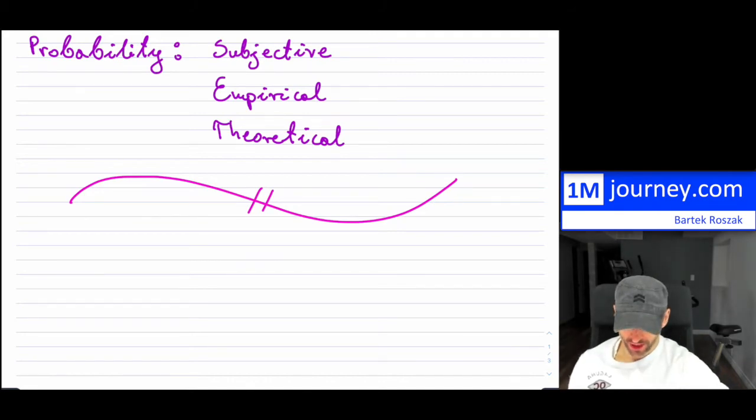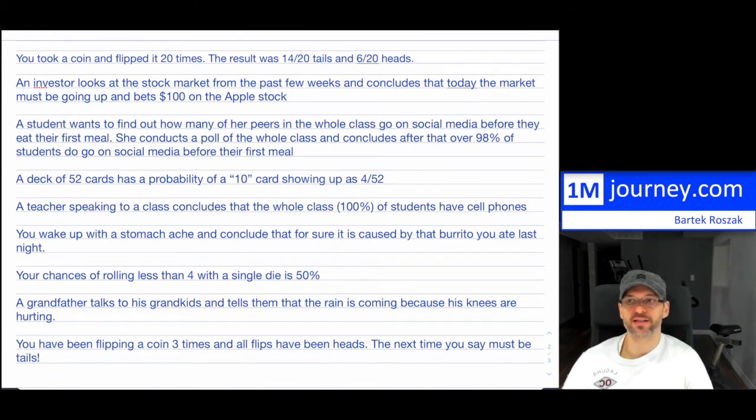Let's show some examples. Here I present to you numerous examples. The first one is you took a coin and you flipped it 20 times. The result was 14 out of the 20 tails and then 6 out of the 20 heads. So what would this be? Would this be subjective, empirical, or theoretical? Well, because you've actually conducted this experiment, you actually took the coins and you flipped them yourself, you can actually see exactly what is happening. Empirically, you can tell this is how many tails I got, this is how many heads I have. So this would be an empirical probability. It's based on an experiment that you have conducted. So I'll put here empirical and then E for that.